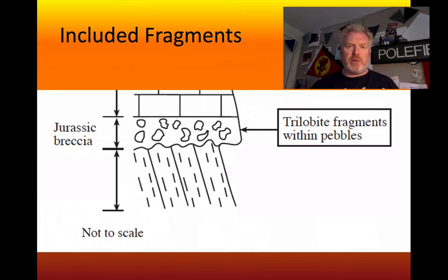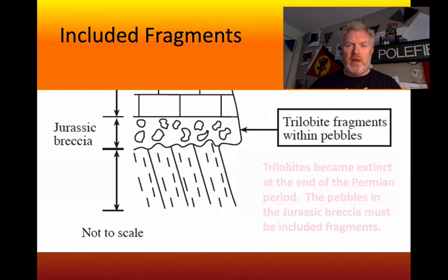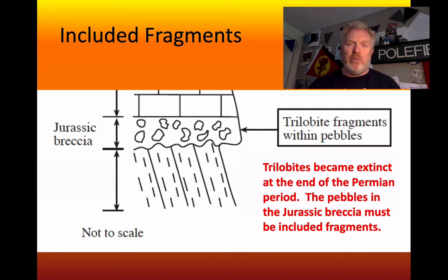Let's have a look at some of the techniques we can use. Let's start with included fragments, focusing towards the bottom of this sequence. We can see that we've got fragments of clast within the breccia that contain trilobite fragments. Now that means those fragments must be older than the Jurassic, in particular because trilobites became extinct at the end of the Permian. So those trilobites cannot have been swimming around in the sea when that Jurassic breccia was deposited — they must have been eroded out of a pre-existing rock.